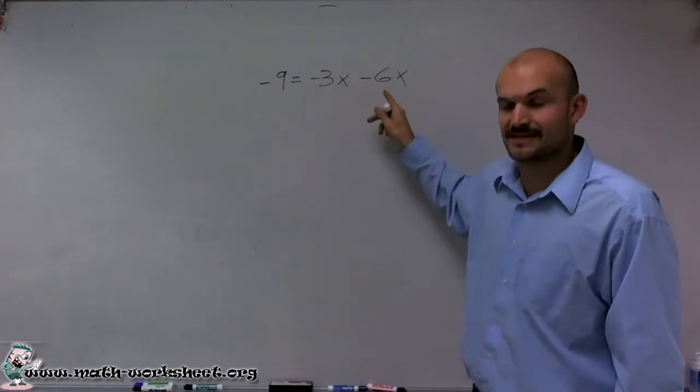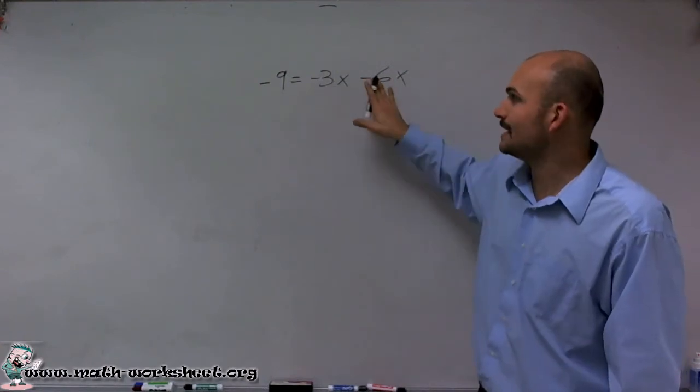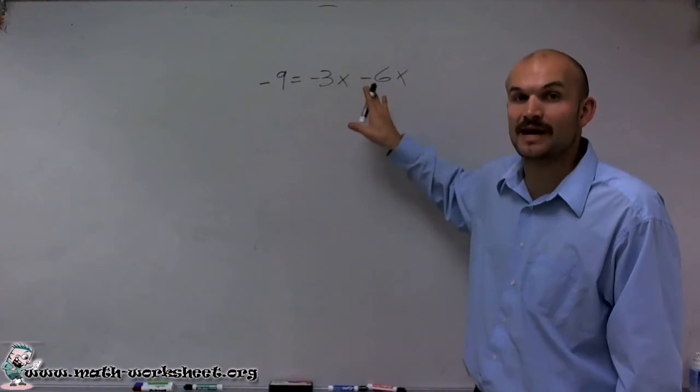So I have negative 3x minus 6x. Therefore, I can simply combine them. Since they're like terms, I can just combine the coefficients.